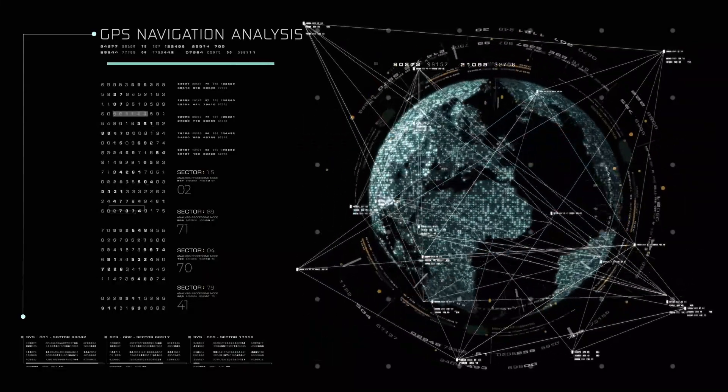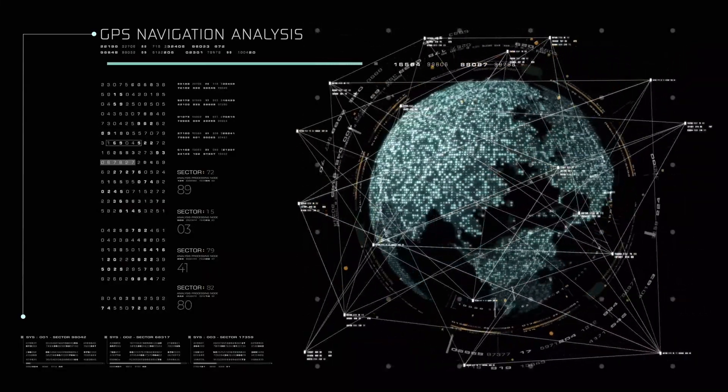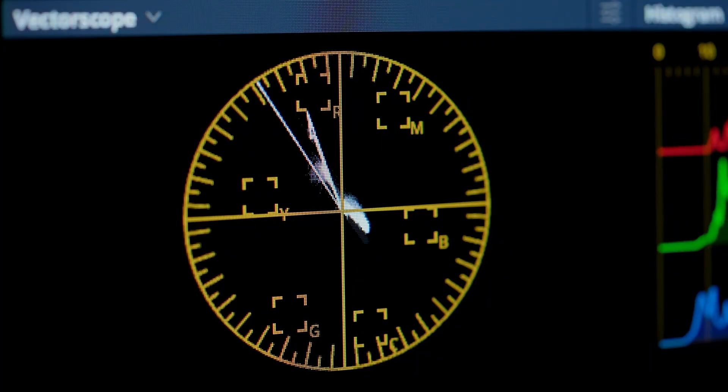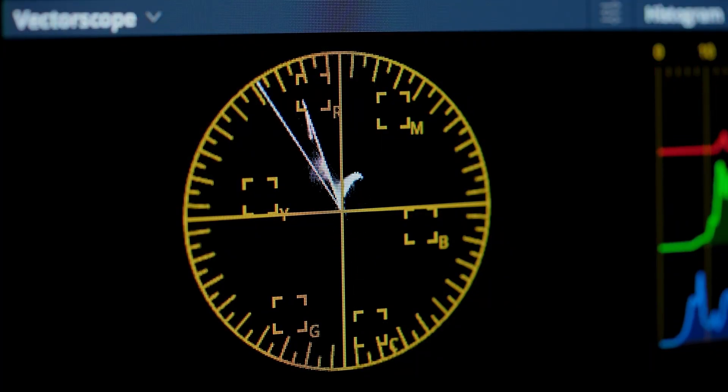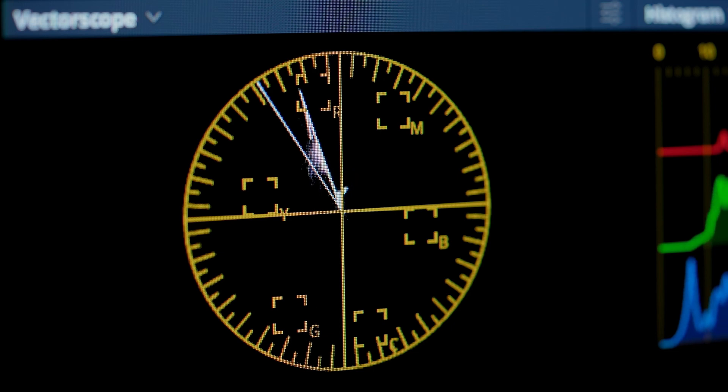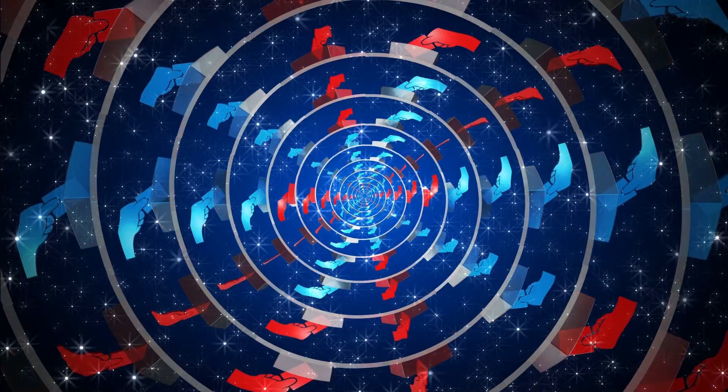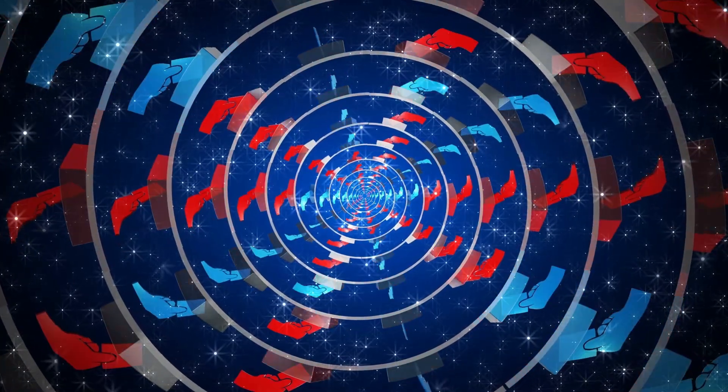As of today, Voyager 1 and Voyager 2 are over 14 billion kilometers from Earth, defying all expectations and continuing to push the boundaries of our knowledge. These spacecraft, roughly the size of a Volkswagen Beetle, are equipped with technology that would seem primitive by today's standards.